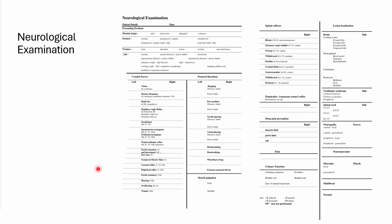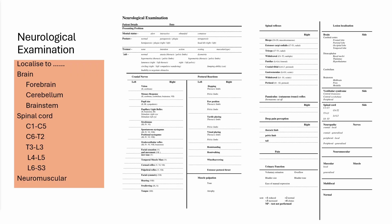This is the full exam sheet, which you can download from books, or you can email me and I'll give you a copy of mine. The scoring system used is: reduced, normal, increased, and clonus in the case of some reflexes.